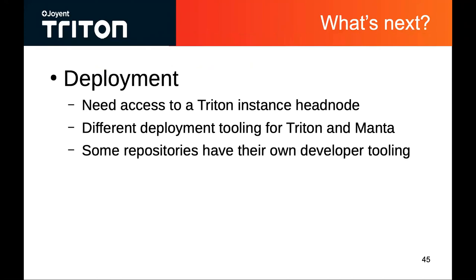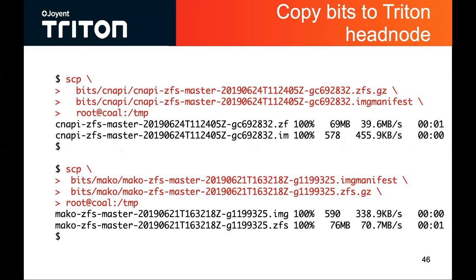Let's talk about deployment. Obviously you need access to a Triton instance. These are ZFS images and manifests — the things we're going to be ultimately deploying to a Triton instance. There is different deployment tooling for Manta and Triton, and we'll talk about some of the shortcuts available for some repositories. Literally just copy the ZFS gzip file and the image manifest to your Triton instance. In this case it's CoaL — I'm just dropping into the temporary directory. I'm showing you this for Mako, the Manta storage image, as well as Cnapi, which is the compute node API service for Triton.